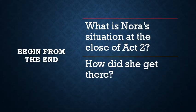Beginning from the end with Nora as our protagonist, we ask ourselves: what is her situation at the close of Act 2? Where is she? What's happening to her? What's going on in her mind in terms of the crisis, the story of the play — and how did she get there? What events led up to her being in this state, this particular dilemma?